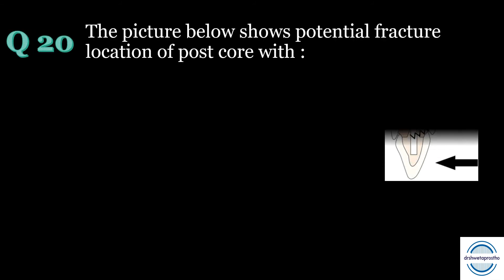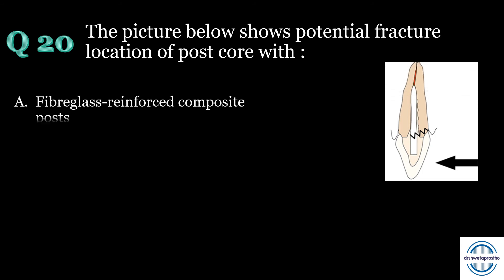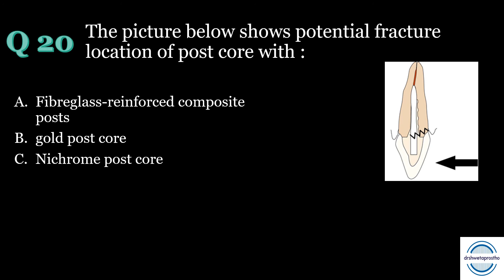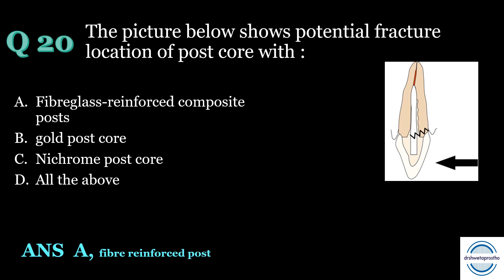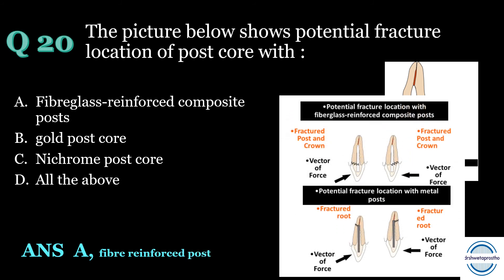Question number twenty: The picture shows the potential fracture location of a post core with — A) fiberglass reinforced composite post, B) gold post core, C) nichrome post core, or D) all of the above? The answer is A — fiberglass reinforced composite post. With the fiberglass post and core, fracture usually occurs in the cervical part of the crown. With a metal or more rigid post of high modulus, radicular fracture occurs — meaning the root fractures where stresses are maximum.